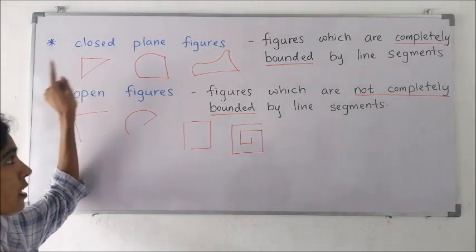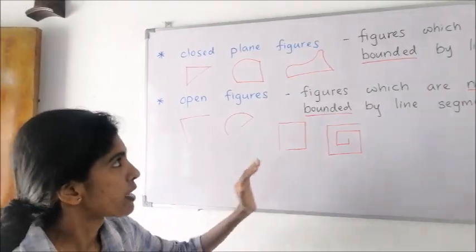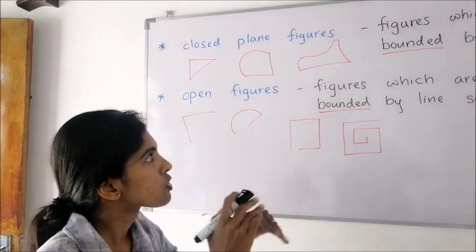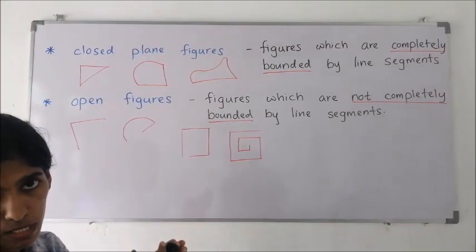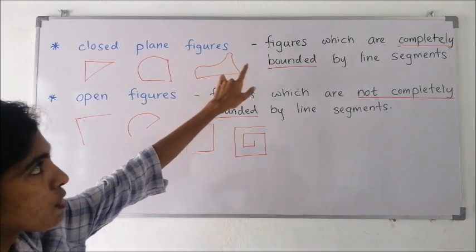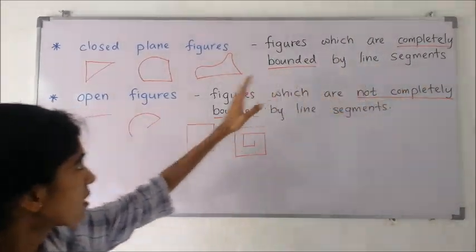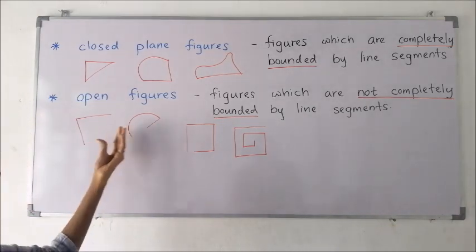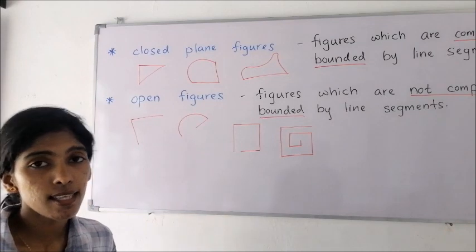Now we need to learn about two more things: closed plane figures and open figures. Closed plane figures — with the help of the name we can identify them. The figures here are completely bounded by straight line segments or by curved line segments. Such figures are called closed plane figures. The definition: figures which are completely bounded by line segments — which can be curved or straight. Open figures are the figures which are not completely bounded by line segments.